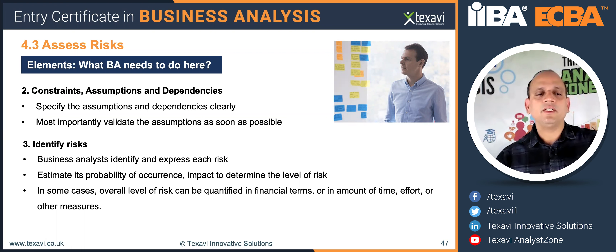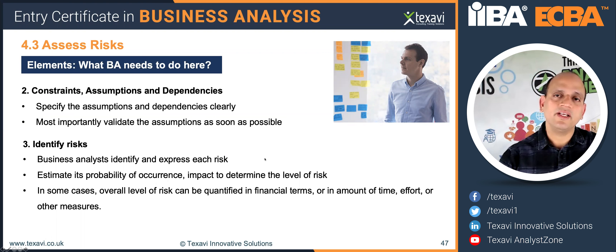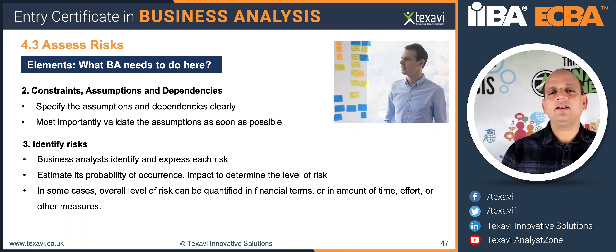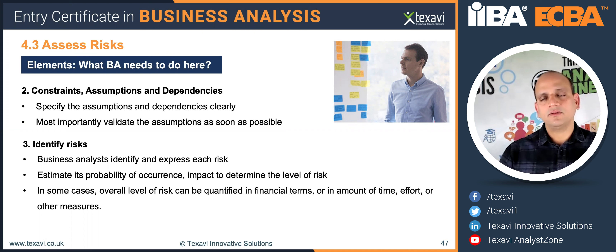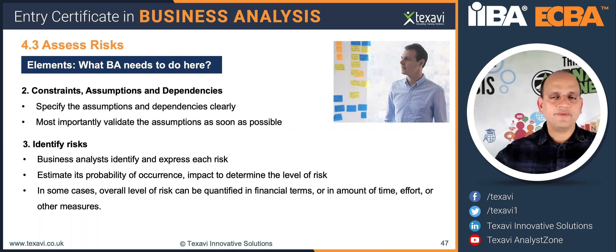As BAs, we need to identify and express each risk: what type of risk, the probability of occurrence, and the impact, to determine the level of risk. What is the likelihood of that risk happening? And if it happens — for example, with a confidence level of 70% — what is the likely impact on a scale of, say, one to five? We then multiply both the likelihood and the impact to give a rating or weightage to that risk.